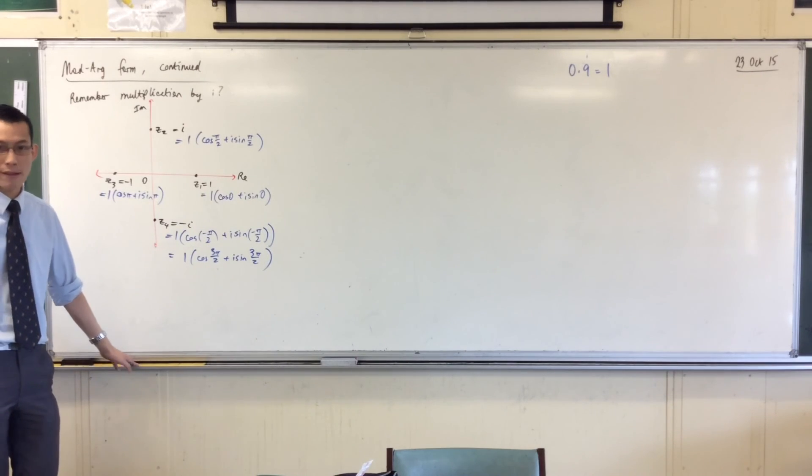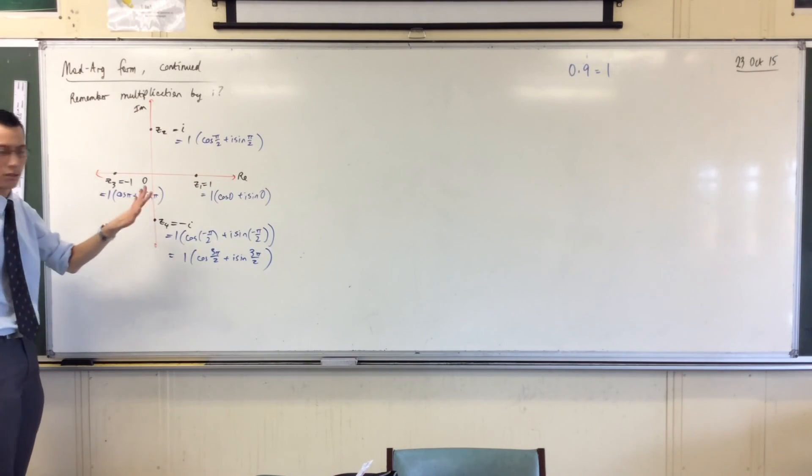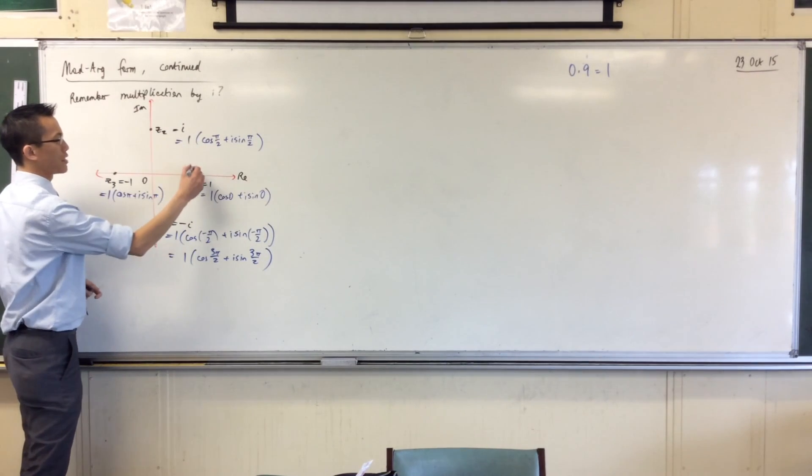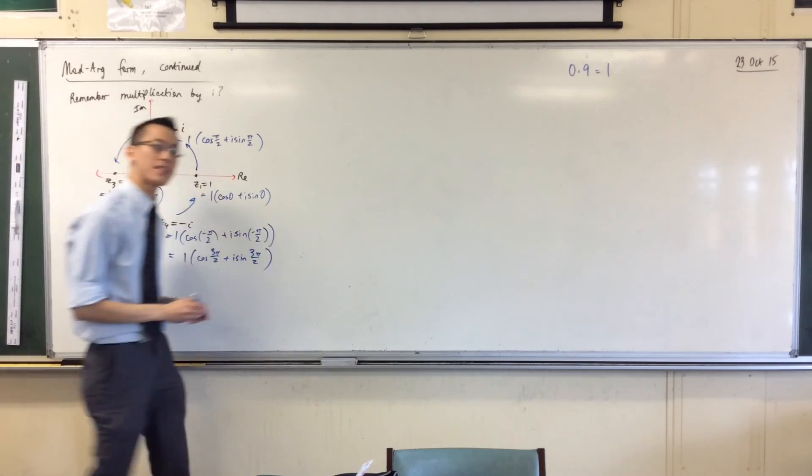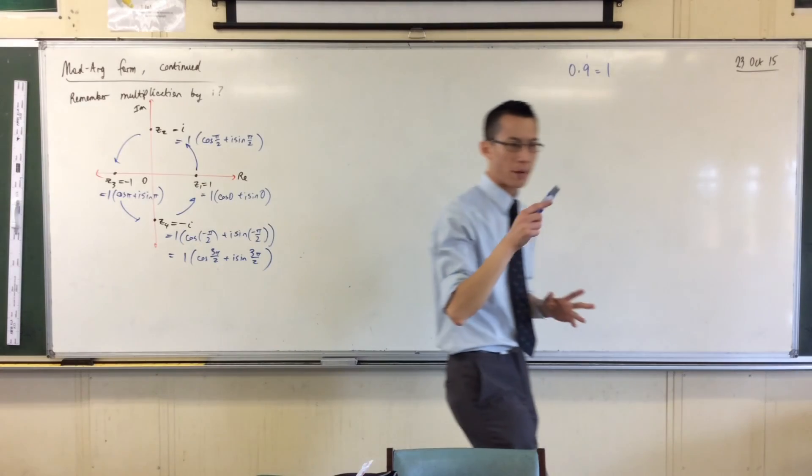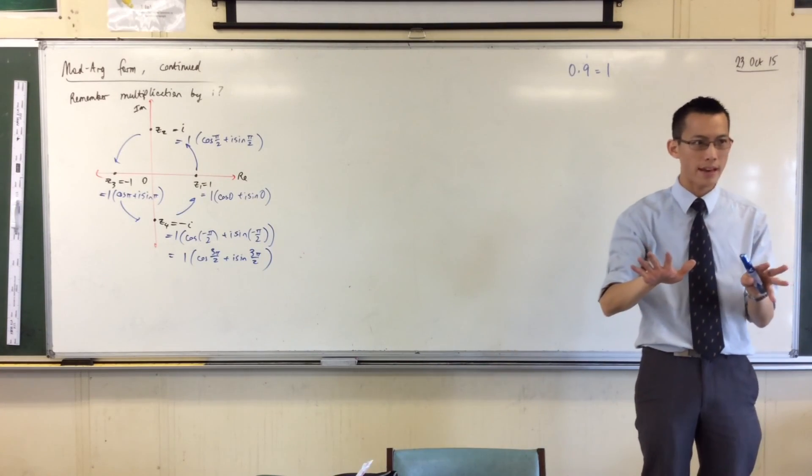All right, so just to rewind, right? As I transition around the circle, as I rotate this way, the moduli is staying the same, but the angles are adding and adding and adding. Are you okay with that idea?